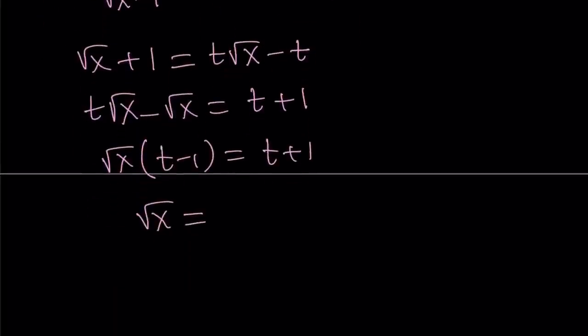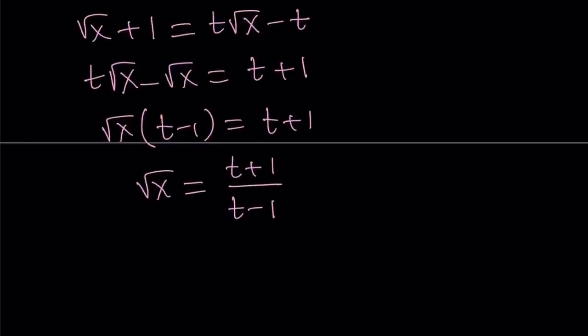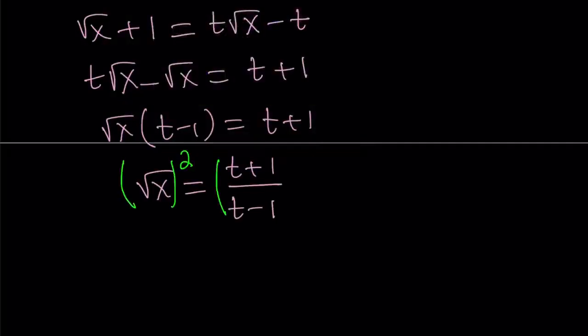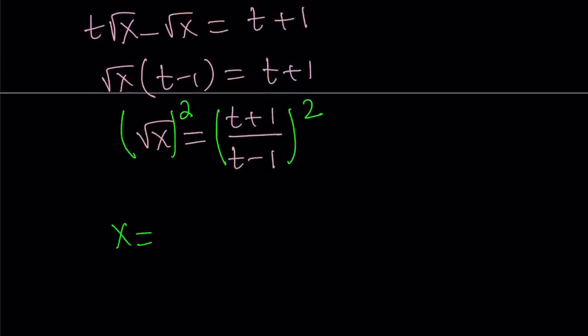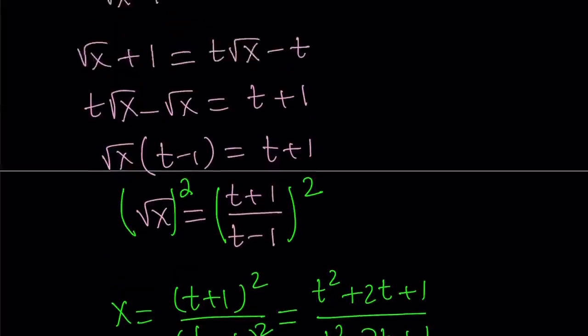So from here, square root of x can be written as t plus 1 divided by t minus 1. Remember, our goal is to find x. So let's square both sides. And if we do, we're going to get x. From here, x becomes t plus 1 squared. Let's separate them: t plus 1 quantity squared divided by t minus 1 quantity squared. So that is the x value.